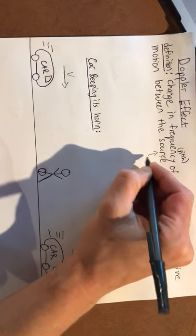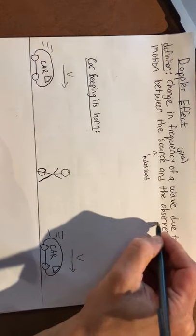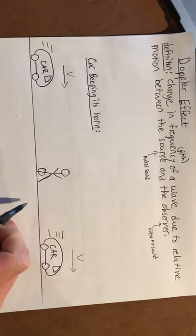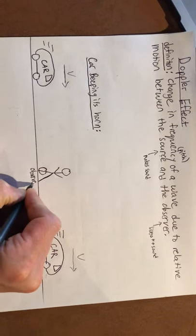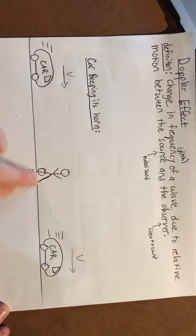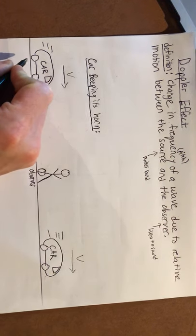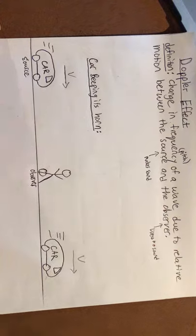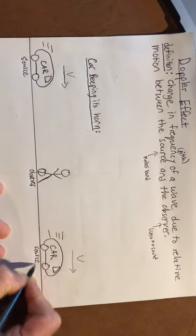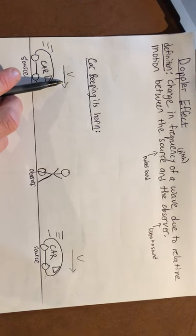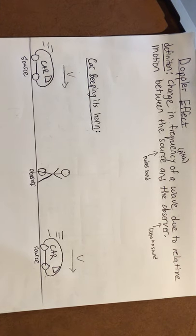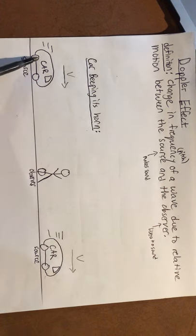In our picture, the observer is a person on the sidewalk, labeled 'observer.' This person is listening to a car approach and then pass them from the left to the right — the car is beeping its horn the whole time, so the car is the source. You may have experienced this with a train passing you when it blows its whistle. The velocity arrow shows the car moving from left to right before and after it passes.